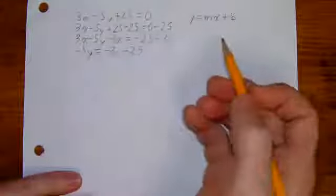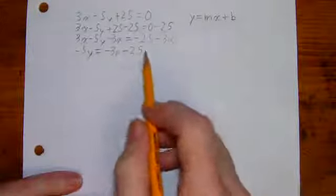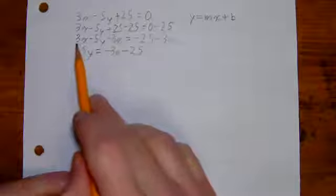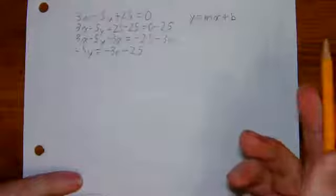So now you can see I'm really close. I have something over here that looks like mx plus b. Over here, I have this negative 5 with the y and I don't want that.